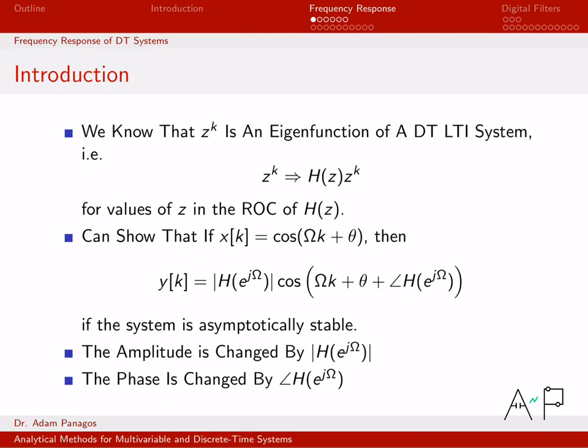Let's derive the fundamental relationship for discrete-time linear systems and show how they change amplitude and phase. To do that we're going to use the eigenfunction property of discrete-time LTI systems. Basically, if I put in z^k — where z is any complex quantity — what comes out is z^k scaled by the complex number H(z). H(z) is what we call the transfer function of the system.